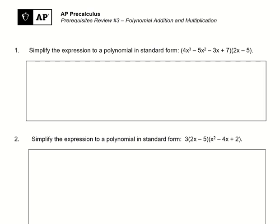The first one: we're going to take the quantity 4x to the third minus 5x squared minus 3x plus 7, and multiply it by the quantity 2x minus 5.